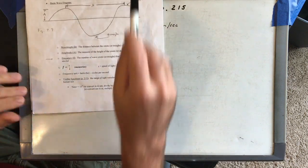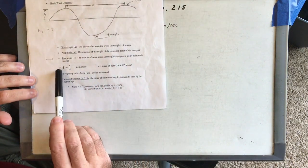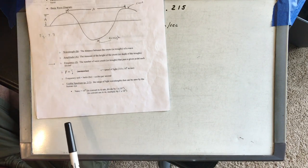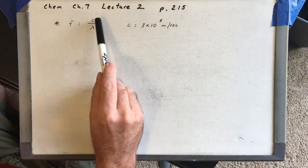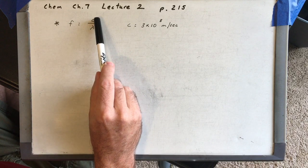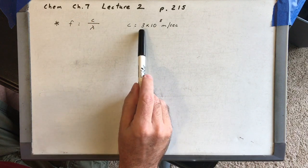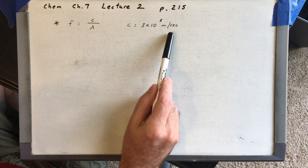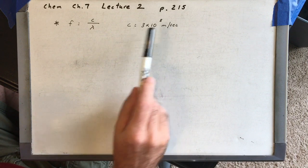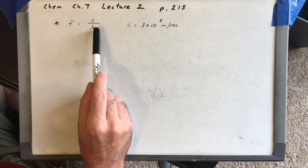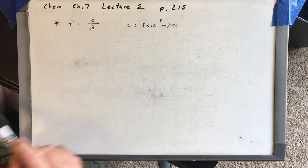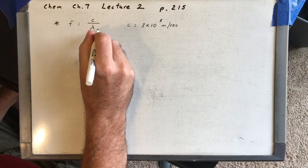In your notes we're on page 2 and we're starting at this equation: frequency is equal to the speed of light over the wavelength. C stands for the speed of light and light moves really fast, so it's 3 times 10 to the 8 meters per second. Lambda — I think in the last video I called this gamma — but this is lambda, which stands for wavelength, and that's going to be in meters.